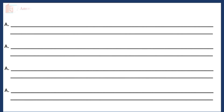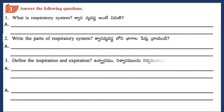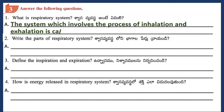Section 3: Answer the following questions. Question 1: What is the respiratory system? Answer: The system which involves the process of inhalation and exhalation is called the respiratory system.